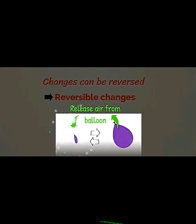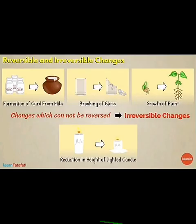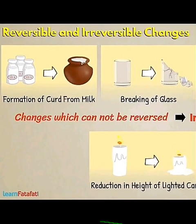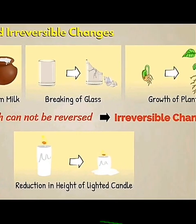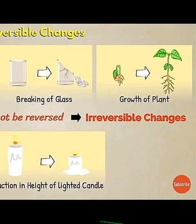The changes which cannot be reversed are known as irreversible changes. For example, formation of curd from milk — once curd is formed, you cannot convert it back into milk. Breaking of a glass — if a glass breaks, you cannot make it a glass again. Growth of a plant — a seed grows into a plant, but that plant cannot go back to being a seed. All are examples of irreversible change.